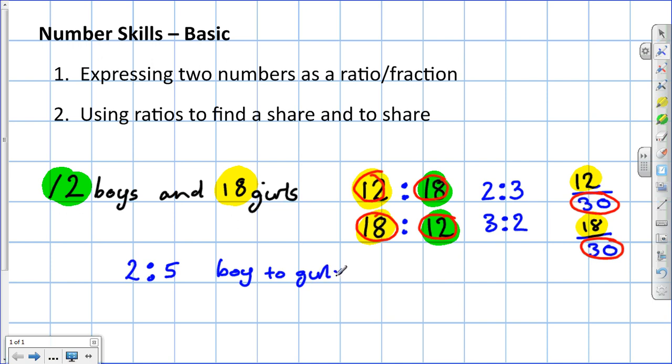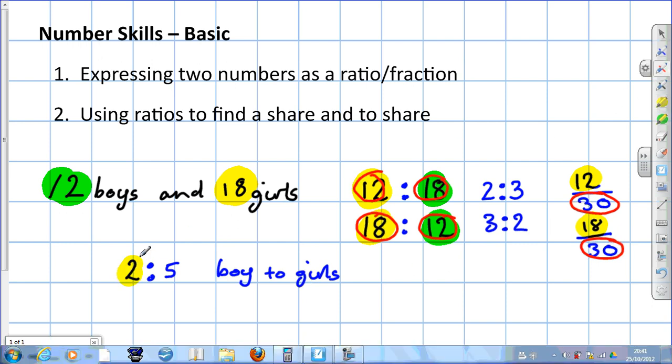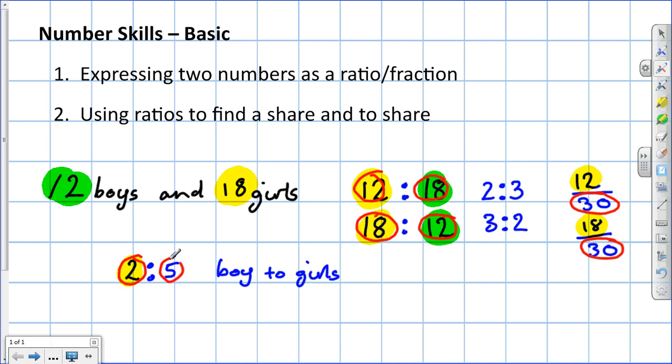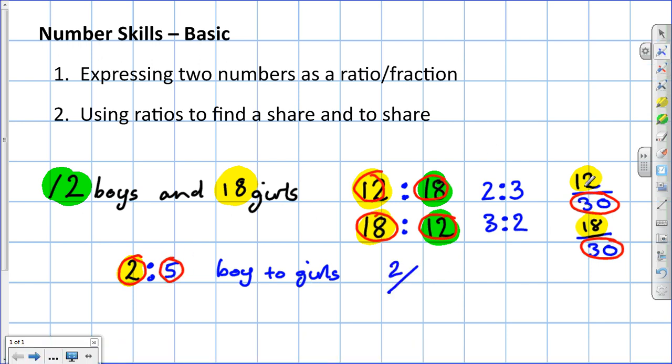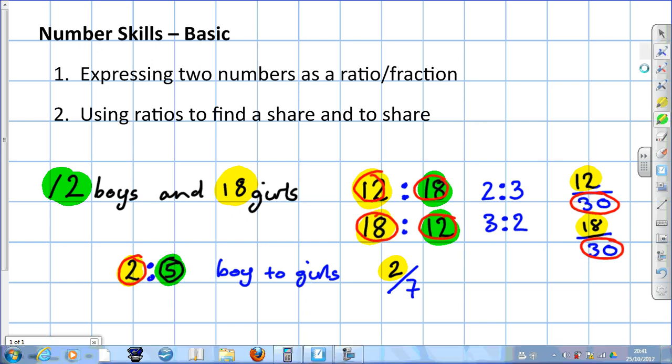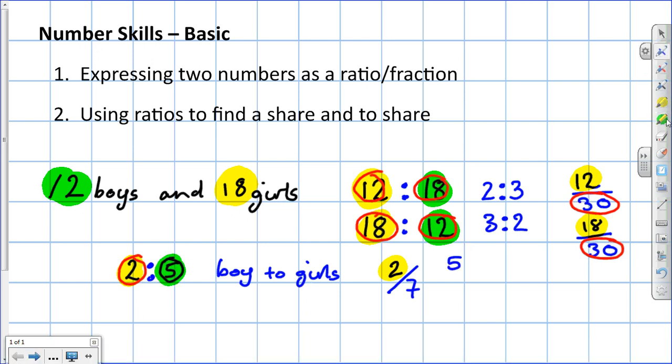What fraction of the class are boys? It would be 2 out of the total, which is 7. So the fraction of boys is 2 out of 7. What fraction of the class are girls? It would be 5 out of the total, 7.